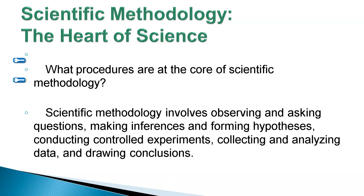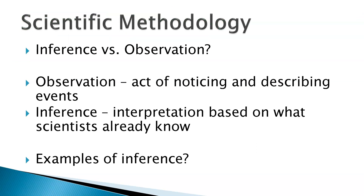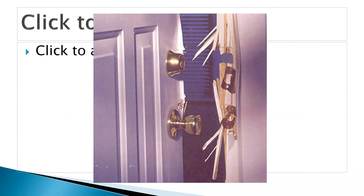Some people are confused by inference and observation. An observation is just noticing something — like a police officer seeing a car run a red light. Inferring is interpretation based on what you already know. For example, if you go home and your door has been kicked in, you would infer your house has been broken into. But why couldn't it be a bear or a large animal? All of those are inferences based upon your previous knowledge. You don't see a suspect — all you see is the scene and you infer what's happening.